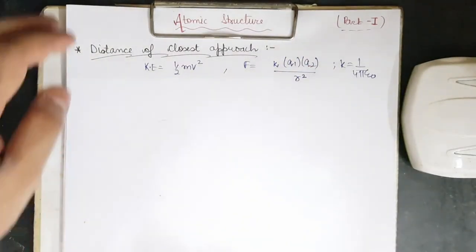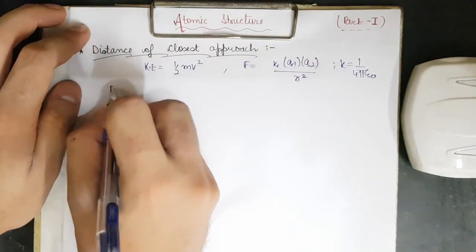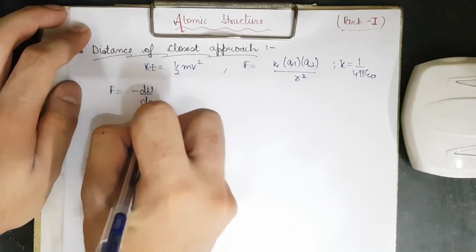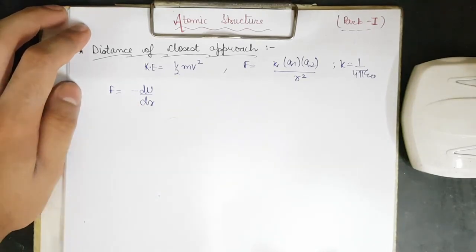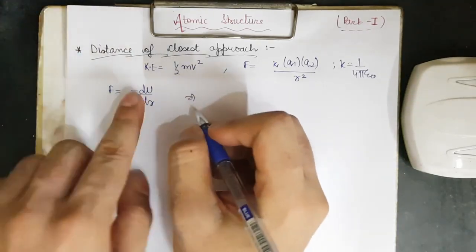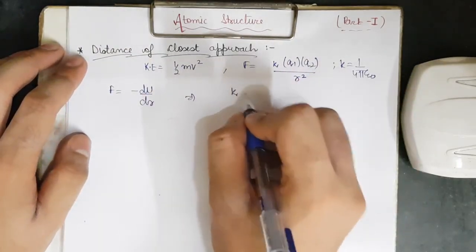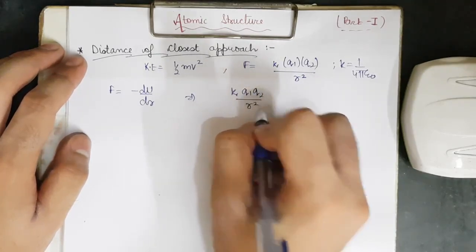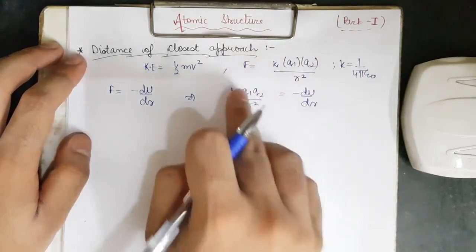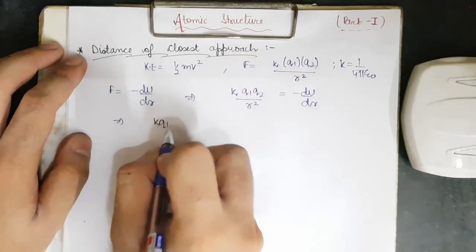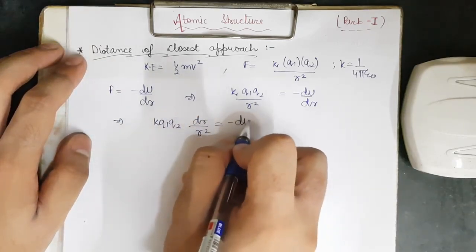Now let us understand the potential energy in electrostatic terms. The force is given by minus dU/dr — more precisely minus del-U/del-r, but minus dU/dr is sufficient for now. We need to derive U, where U is the potential energy. So F equals k times q1 times q2 over r squared, which equals minus dU/dr. Multiplying both sides by dr gives: k q1 q2 dr over r squared equals minus dU.